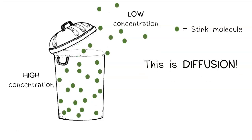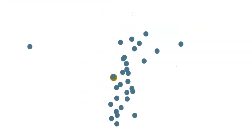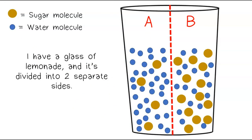Let's look at another example in a liquid. I have a glass of lemonade, and it's divided into two separate sides. The yellow circles represent sugar molecules, and the blue circles represent water.